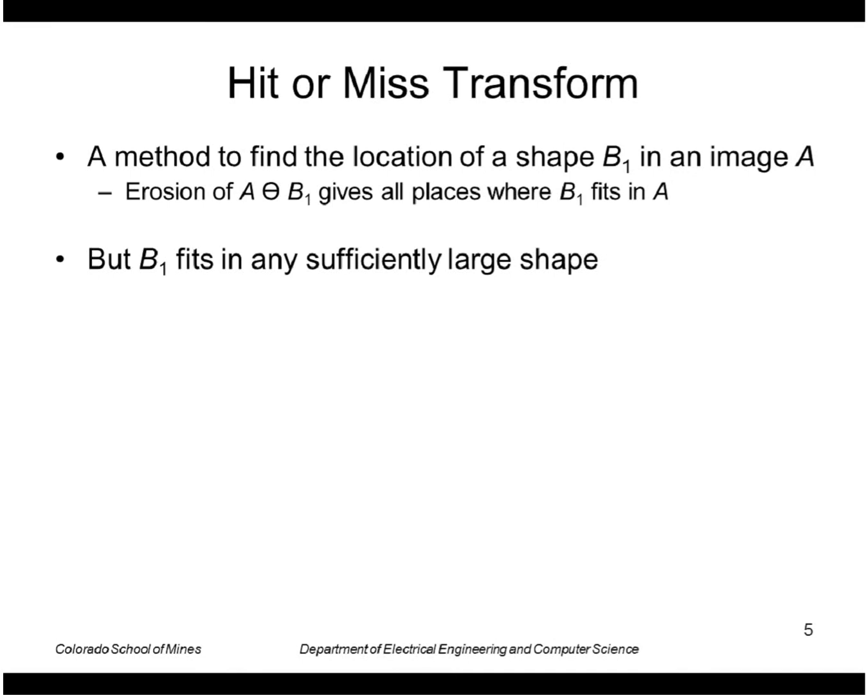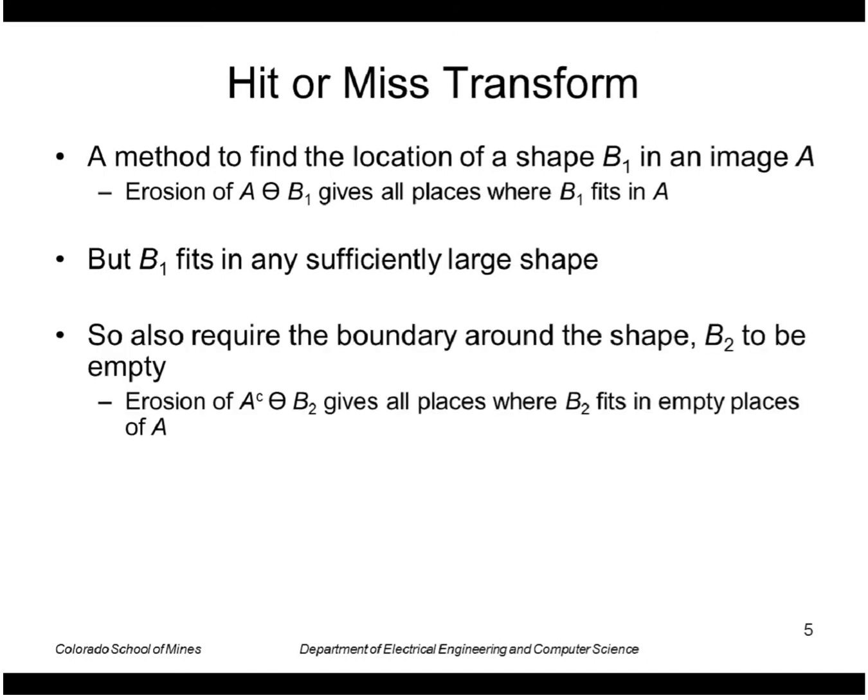However if I have a large region A then of course any shape will fit inside that. So we need a way to distinguish between just very large regions fitting by accident and the exact shape that we're looking for. So the way we do that is we define a boundary around the shape to be empty. Call that B2.